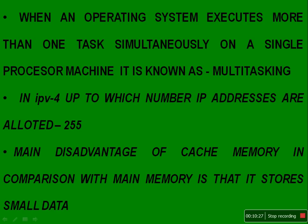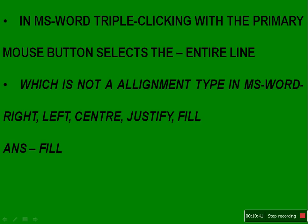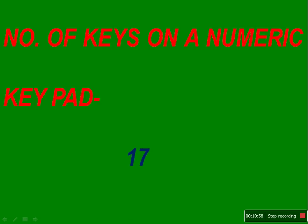In IPv4, IP addresses are allotted from 0 to 255, so the answer is 255. The main disadvantage of cache memory compared to main memory is that it stores only small amounts of data, while main memory stores large data. In MS Word, triple-clicking the primary mouse button selects the entire paragraph. The alignment type that is NOT available in MS Word is 'fill' — right, left, center, and justify are valid; fill is not.